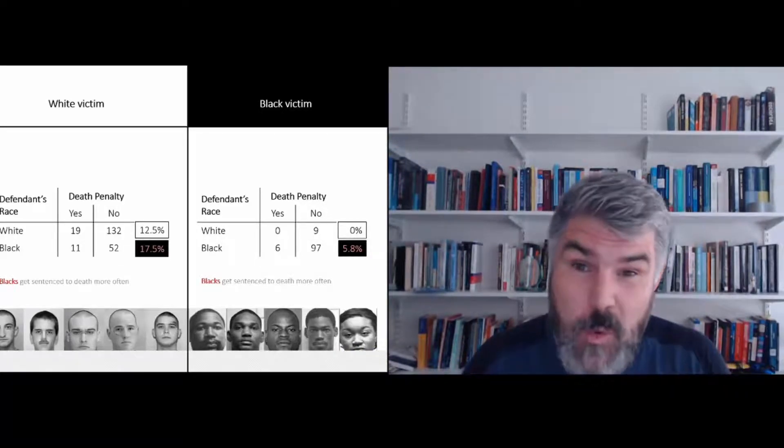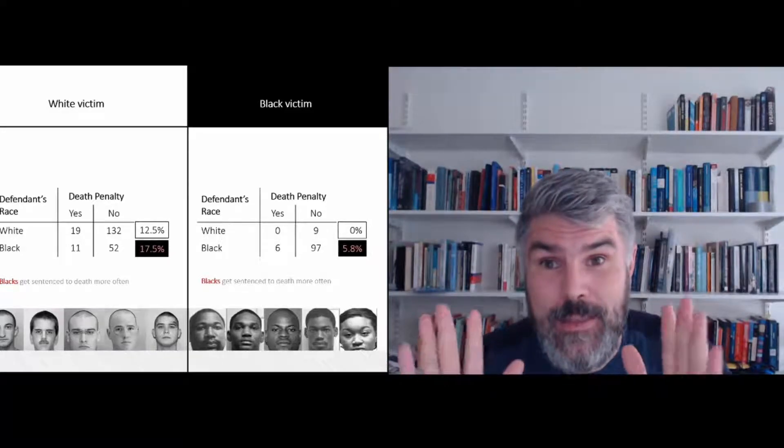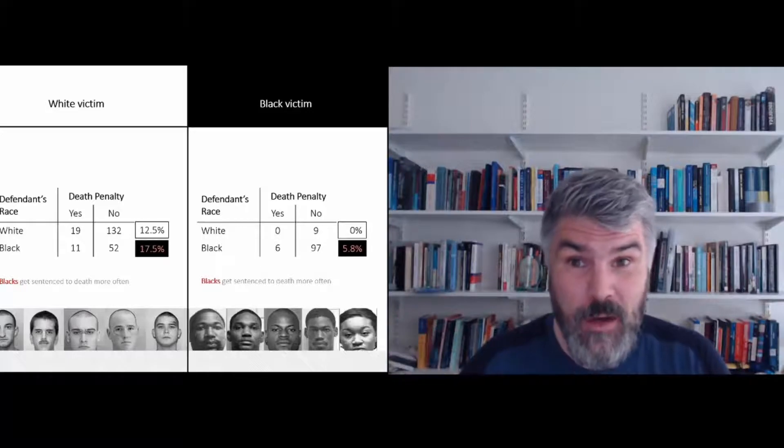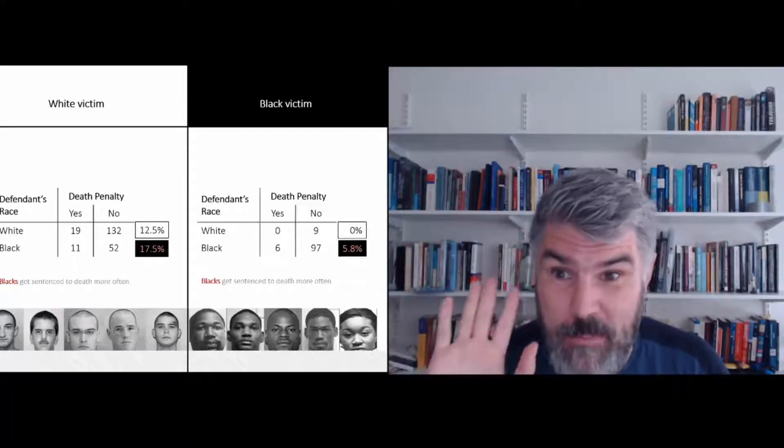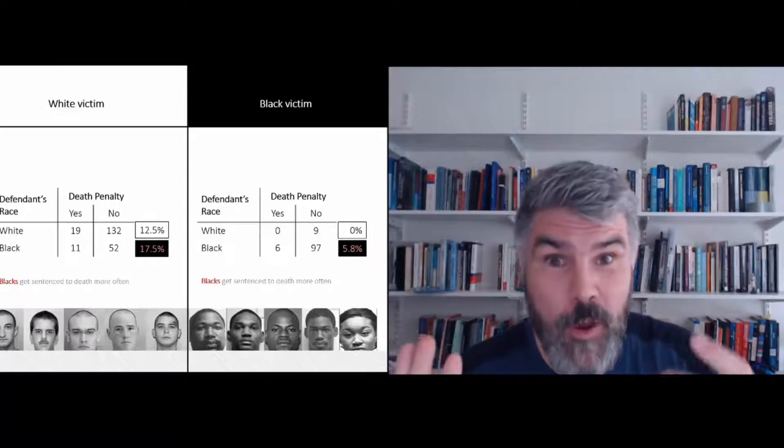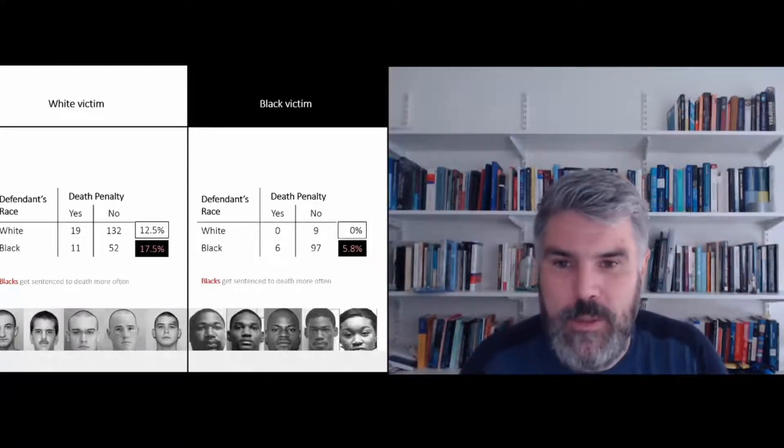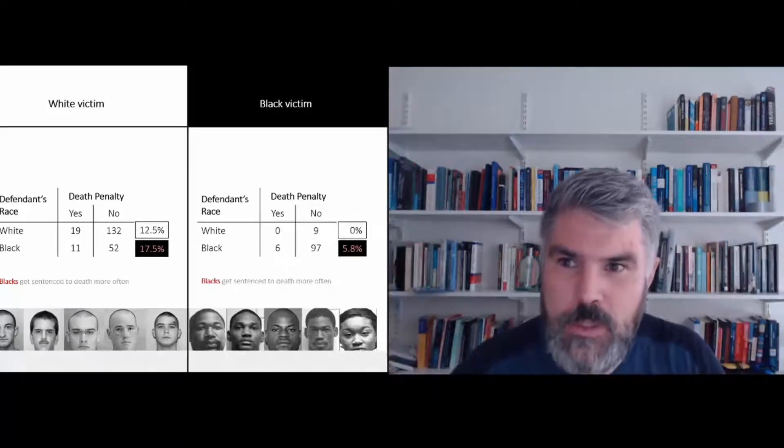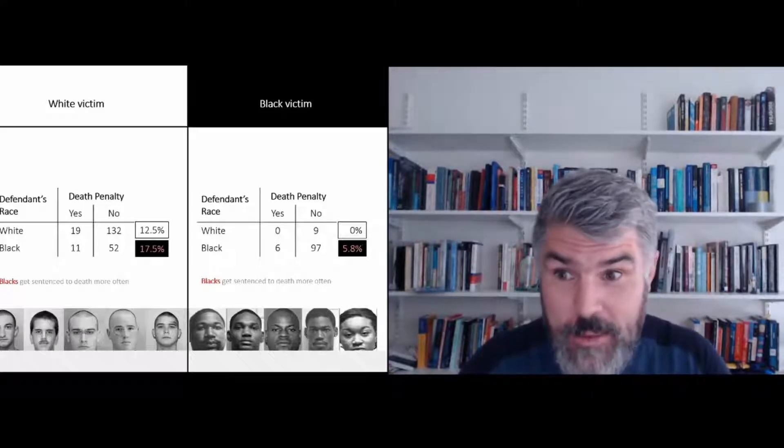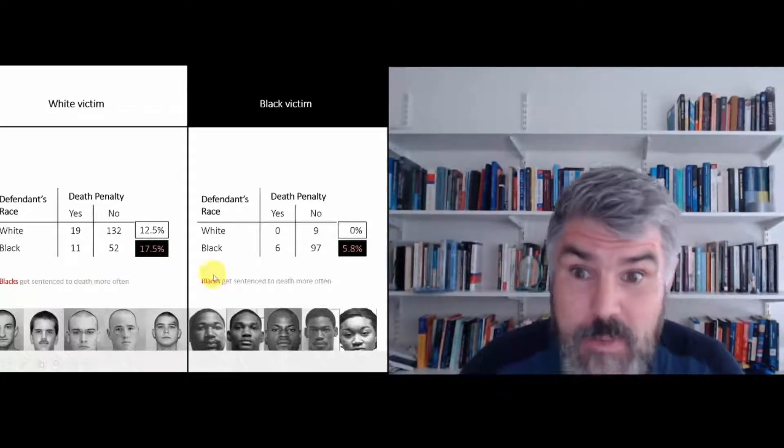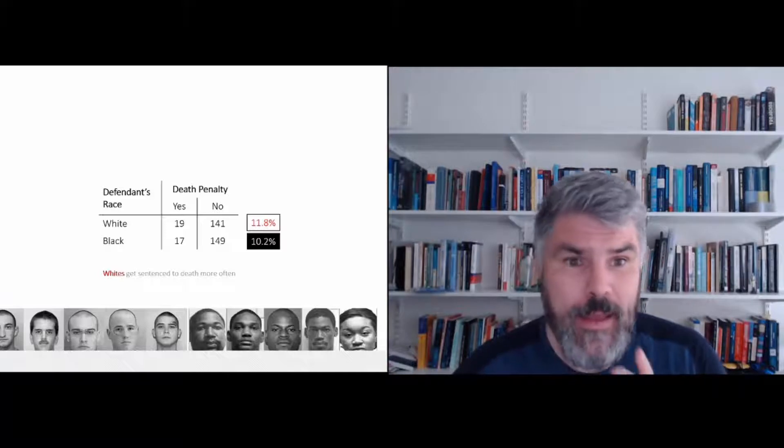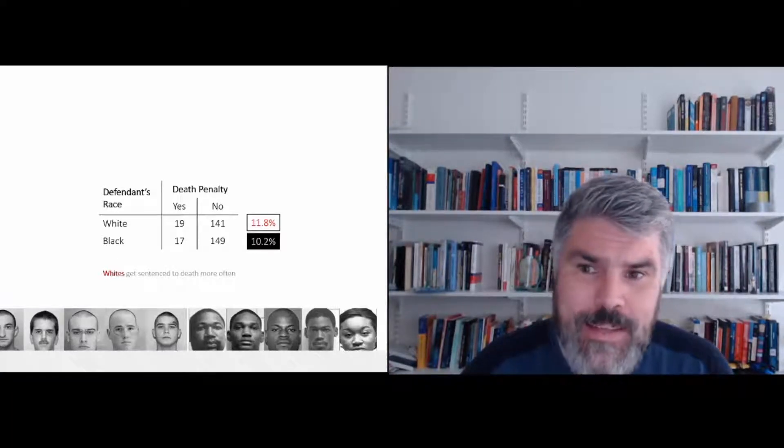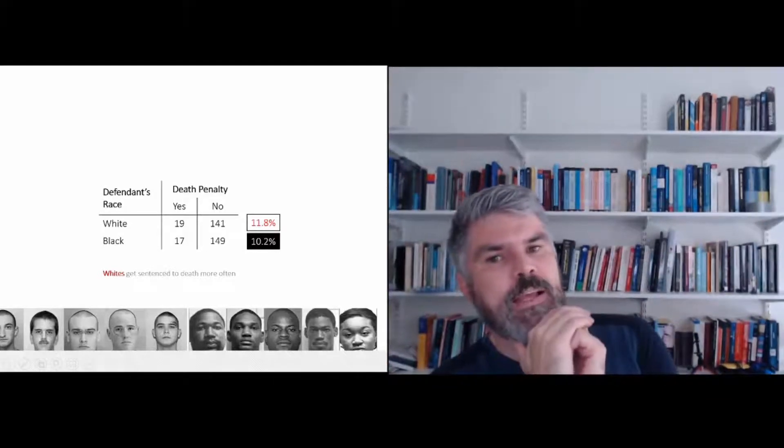So what does it show us? First of all, it shows us one really sad thing: the race of the victim seemed to have mattered for whether the murderer gets sentenced to death or not. Killing a white person led much more often to the death penalty than killing a black person. But when we look at these separate groups, for white victims, it suddenly seems that blacks get sentenced more often to death. For black victims, it also seems that blacks get sentenced more often to death. But when we look at the whole data combined together, it looks as if whites get sentenced to death more often.